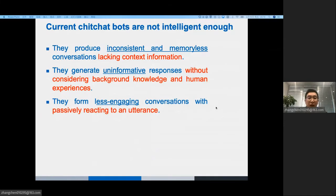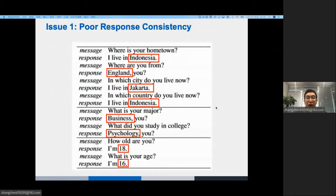Current chatbots have made much progress, but are still not smart enough. They mainly suffer from three issues. First, they produce inconsistent responses, lacking contact information. Here is an example, poor response consistency.